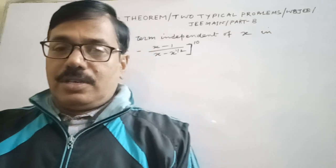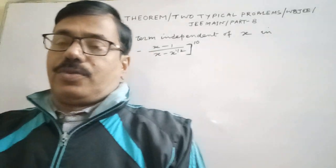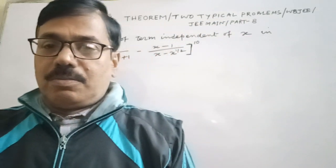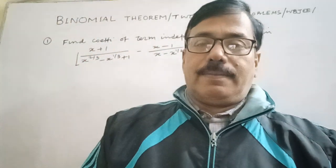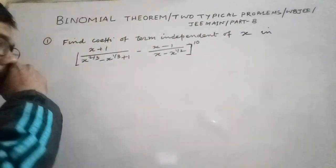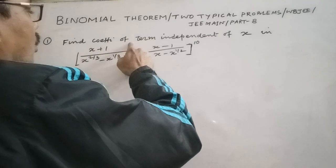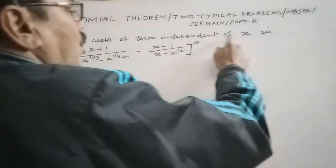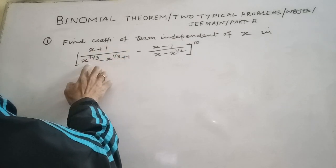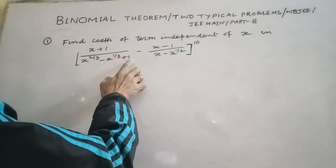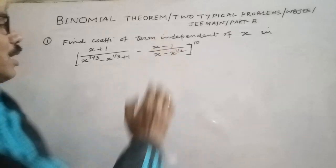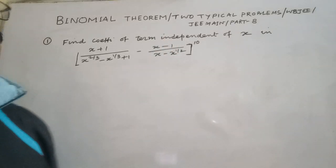Today I will discuss two typical problems of Binomial Theorem. These are problems of competitive exams only. The first problem: find the coefficient of the term independent of x in the expression (x + 1/x^(2/3) - x^(1/3) + 1) minus (x - 1)/(x - x^(1/2)) to the power 10.